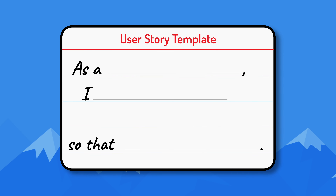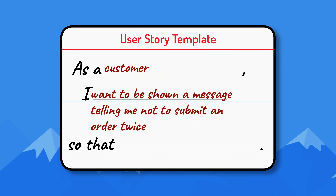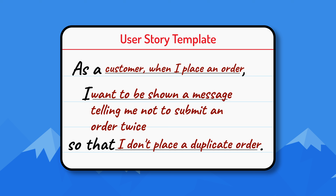You do not always need to choose between a job and a user story — it's possible to merge them and get the benefits of each in a single story. To see how, let's revisit our user story warning people not to submit duplicate orders: as a customer, I want to be shown a message telling me not to submit an order twice so that I don't place a duplicate order. As a user story, it is missing the context provided by the job story's 'when.' But we can add that, transforming this story to: as a customer, when I place an order, I want to be shown a message telling me not to submit an order twice so that I don't place a duplicate order.